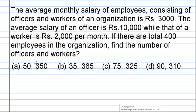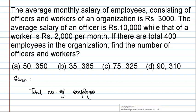The options are: (A) 50 and 350, (B) 35 and 365, (C) 75 and 325, or (D) 90 and 310. It is given that the total number of employees is equal to 400.